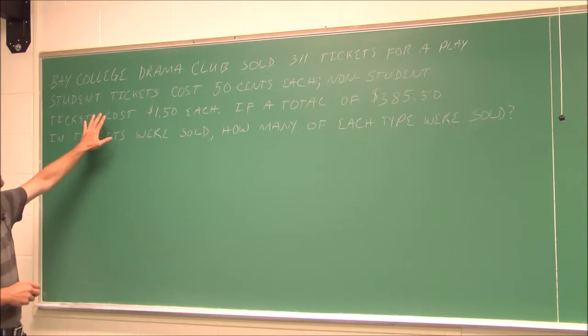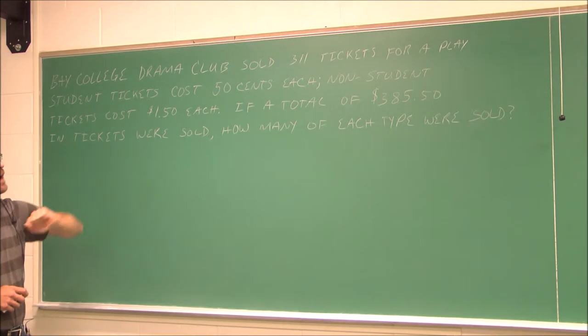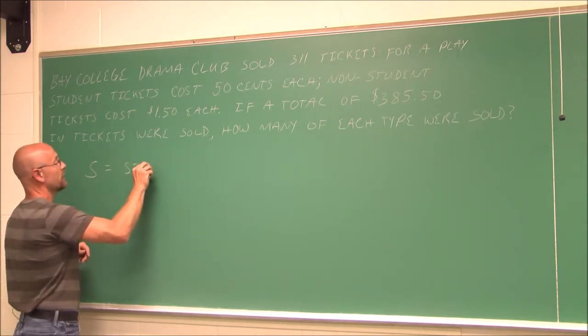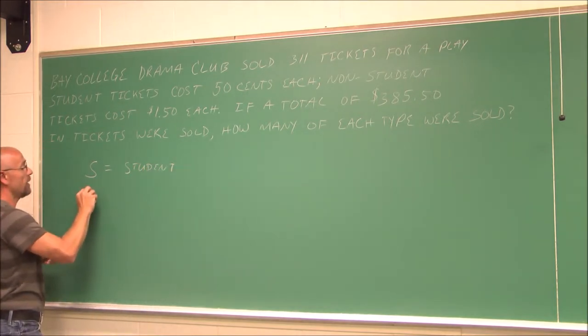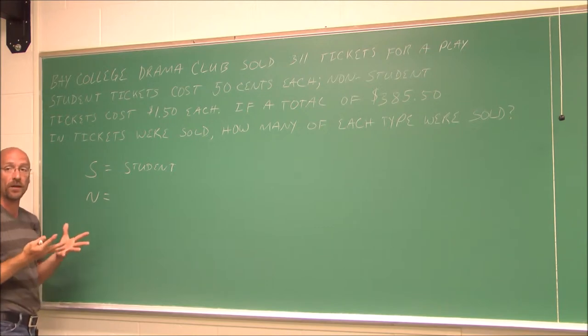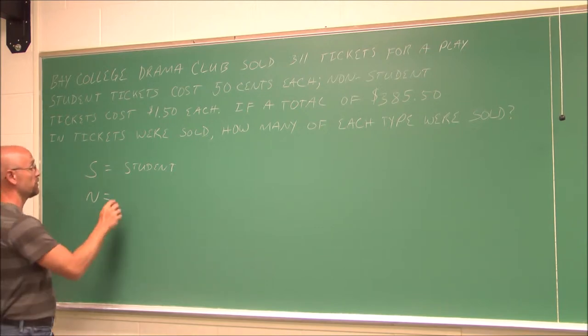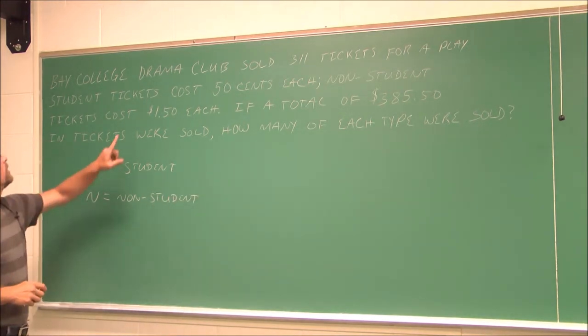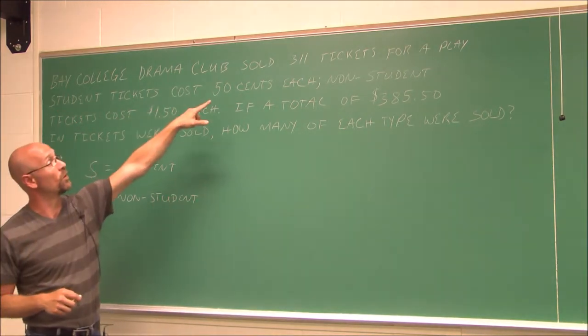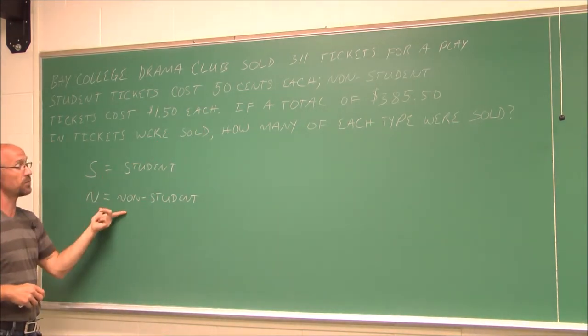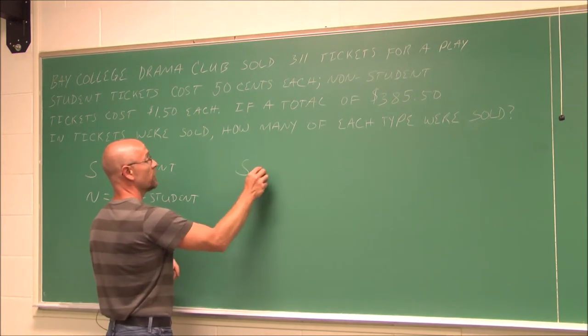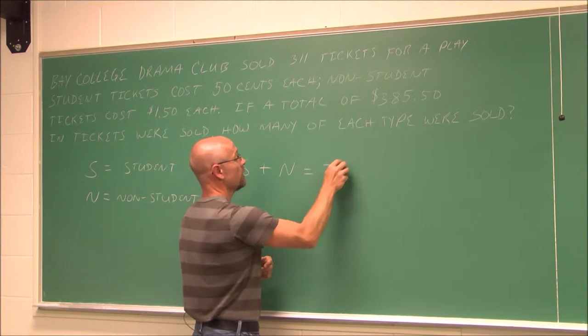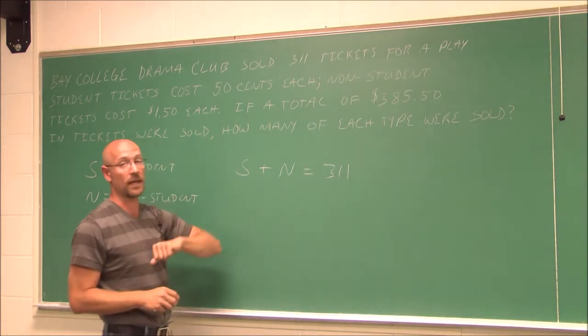So let's see if we can start to build our equation with the given information. We have two types of tickets being sold, student tickets and non-student tickets. So I'm going to say, S is going to be my student ticket, and I'll let N be the non-student ticket. What do we know? Well, we know that they sold 311 tickets. So if we have two types of tickets, their total amount is going to be the total sold. So our student tickets plus our non-student tickets is the total amount of tickets that was given information.